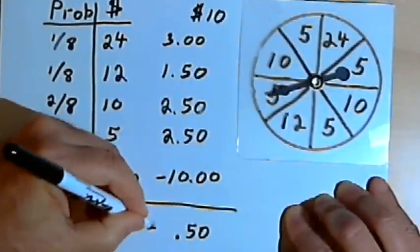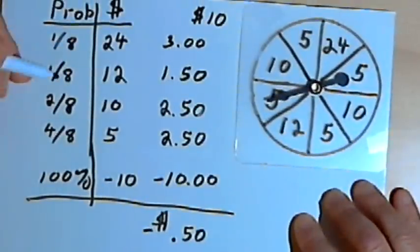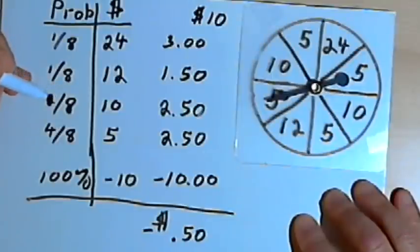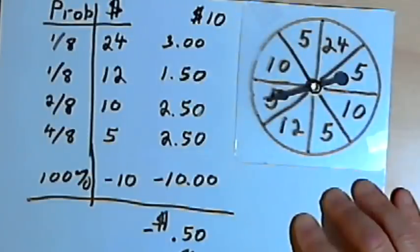Let's put a dollar sign in for all this. In other words, if you played this game a lot of times, hundreds of times, thousands of times, on average you would lose fifty cents each time you played.